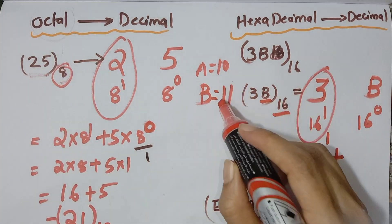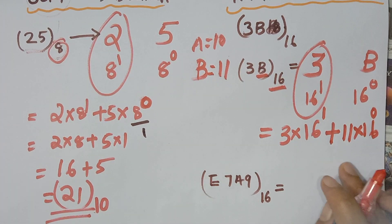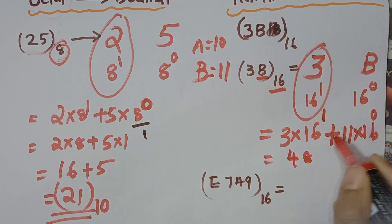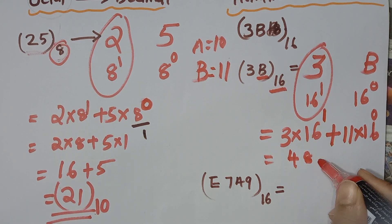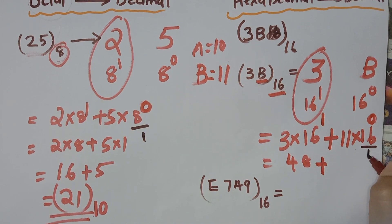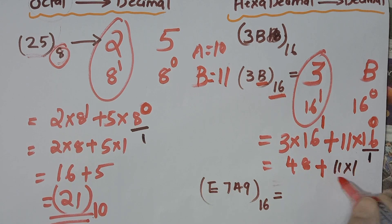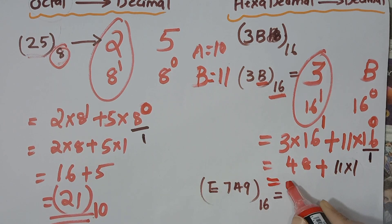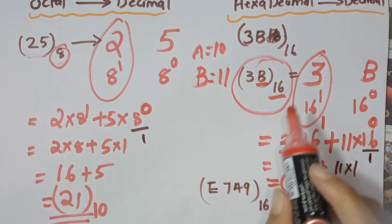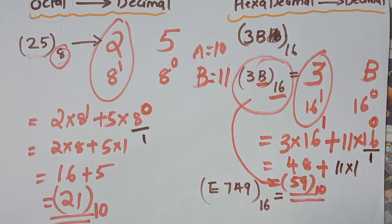We compute: 3 into 16 raised to 1, plus B — which equals 11 — into 16 raised to 0. 3 into 16 is 48, and 11 into 1 is 11. 48 plus 11 is 59. So 3B in hexadecimal equals 59 in decimal.